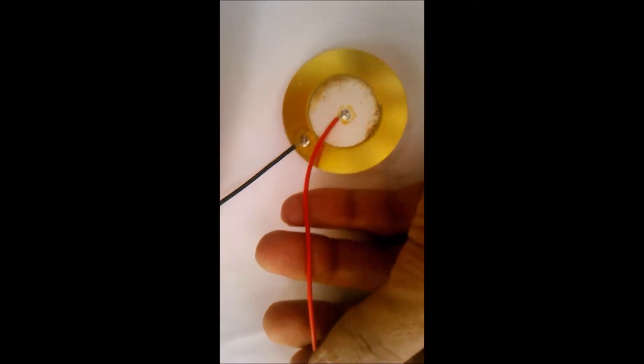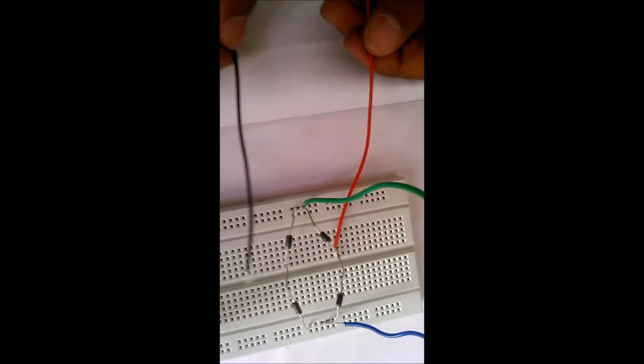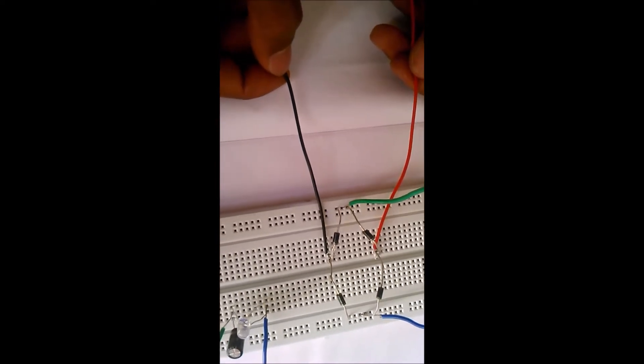Now, connect the positive terminal of the piezoelectric transducer to junction 1 and the negative terminal of the transducer to junction 3.